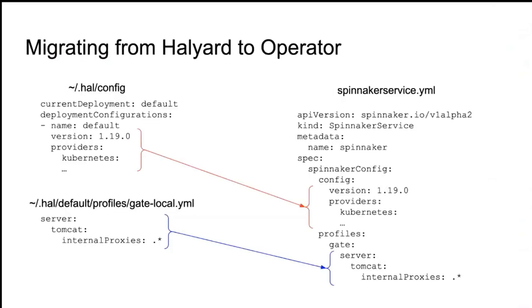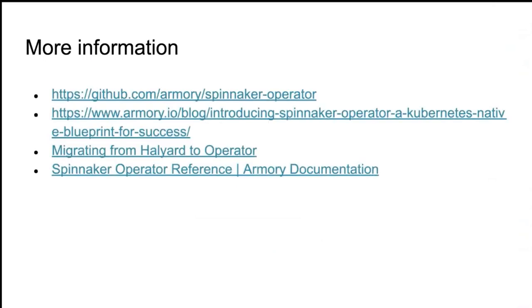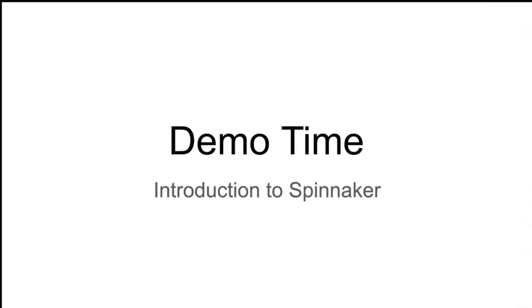Migrating from Halyard to the operator: with Halyard you have a set of configuration files — the main one is .hal/config, plus supplementary files in subdirectories like profile override files. To migrate, it's just a matter of copying the configuration from these files into the SpinnakerService manifest. For more information about the operator, there are links in this deck, which will be shared. Now it's demo time.